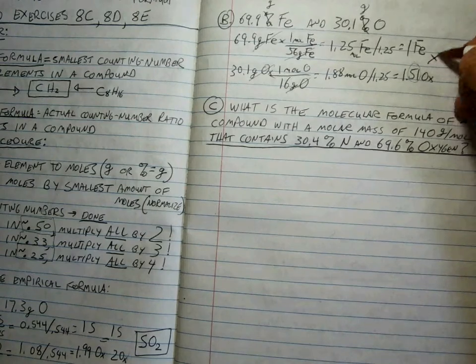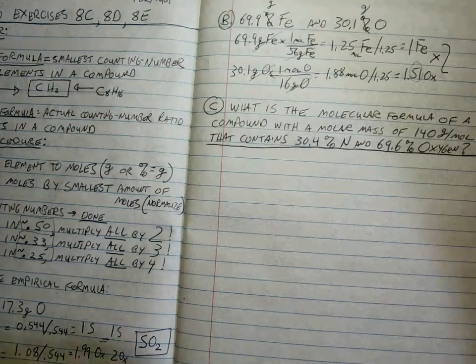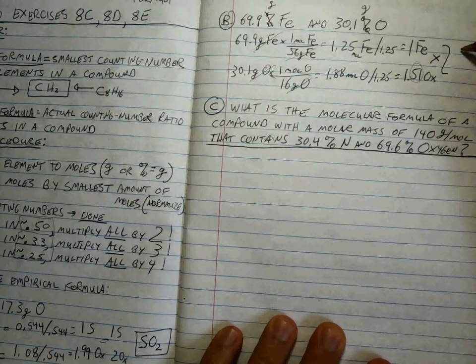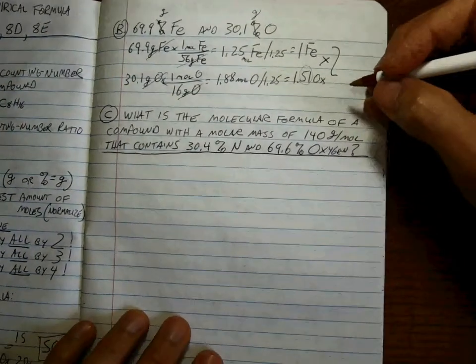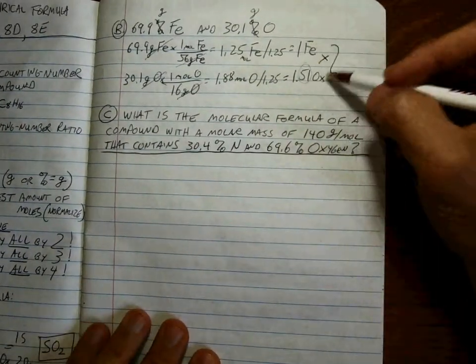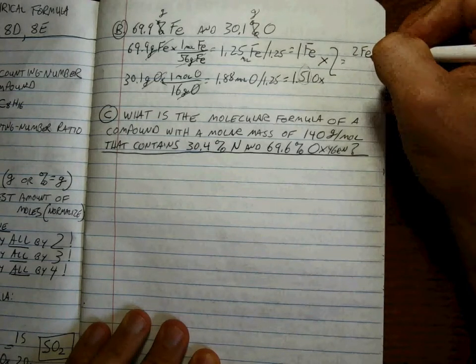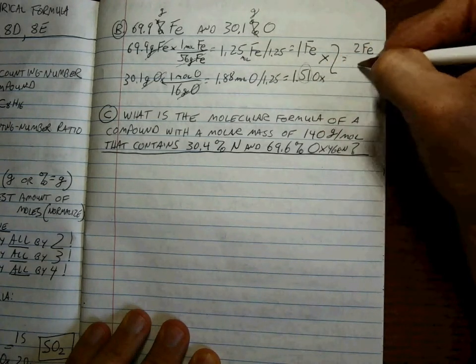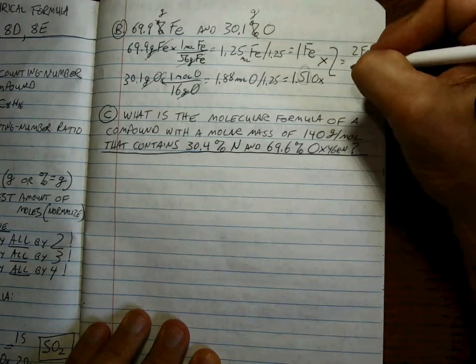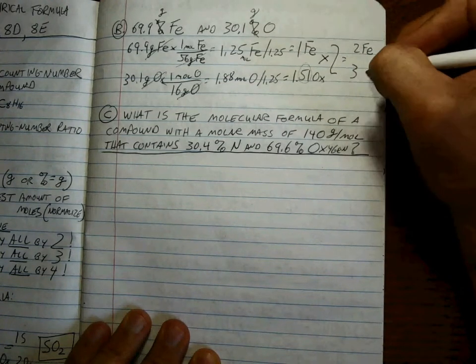It's smack dab in the middle. So when we end up with something at the end that's close to 0.5, we multiply both by 2, which gives us... like that. We're multiplying both of these by 2, which gives us 2 Fe's and 2 times 1.5 is 3.